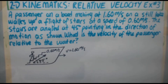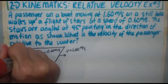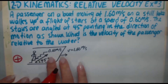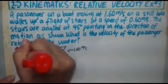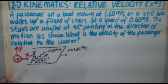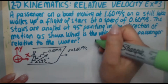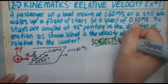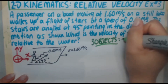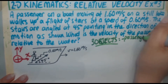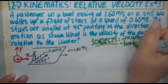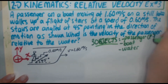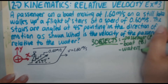We're going to start it like every other problem. First, let's define our positive directions. We're going to let positive be up and to the right, since those are the directions we're dealing with — right will be positive X, up will be positive Y. Next, we have to define our three objects: the passenger, the boat, and the water. We're going to use the abbreviations P, B, and W.